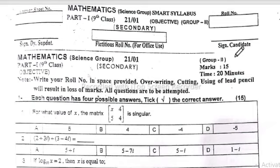Question number 1: For what value of x, the matrix [x, 4; 5, 4] is singular? A singular matrix has determinant equal to 0. So 4x minus 20 equals 0, therefore 4x equals 20, so x equals 5. Option A is correct.